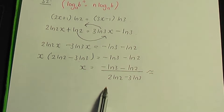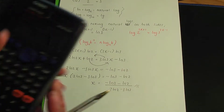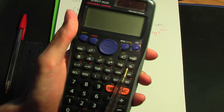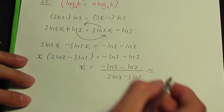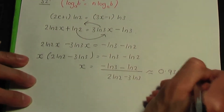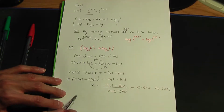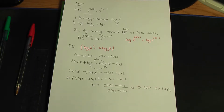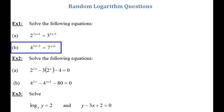This is the solution in terms of ln. Using the ln button on your calculator, the answer works out to 0.938 correct to 3 significant figures. That's the solution to Part A. For Part B, which is 4 to the power 3x minus 2 equals 7 to the power x plus 1, follow the same method and have a go at it yourself — I'll give you the solution to check your answer.